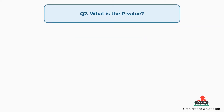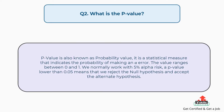Question number two: What is the p-value? P-value is also known as probability value. It is a statistical measure that indicates the probability of making an alpha error. The value ranges between 0 and 1. We normally work with 5% alpha risk; a p-value lower than 0.05 means that we reject the null hypothesis and accept the alternate hypothesis.